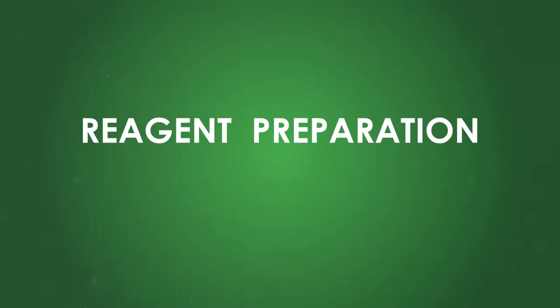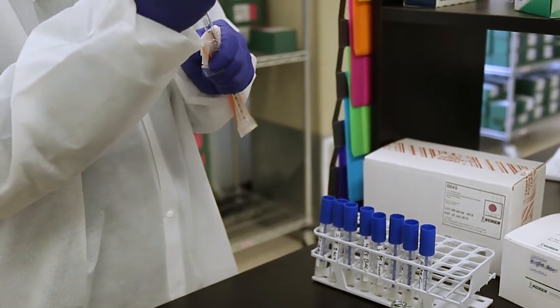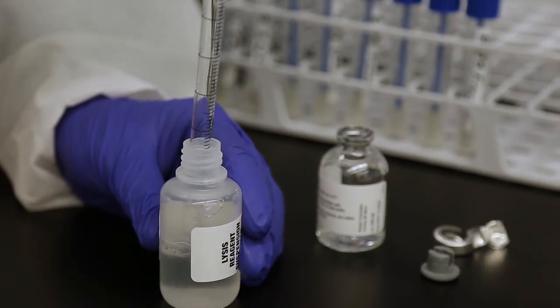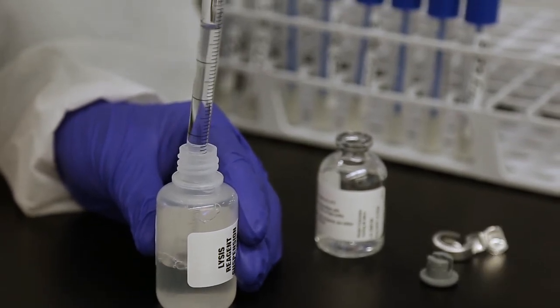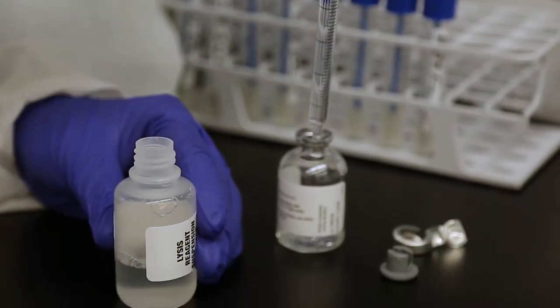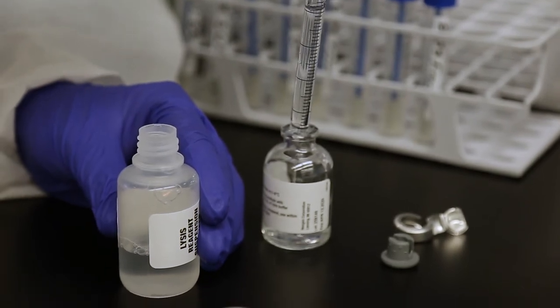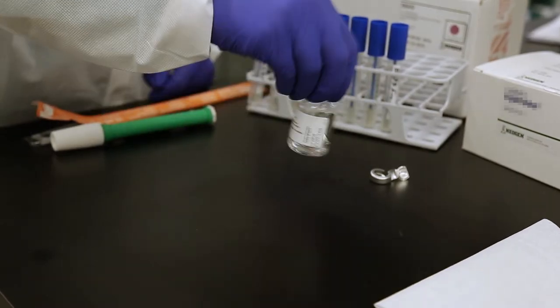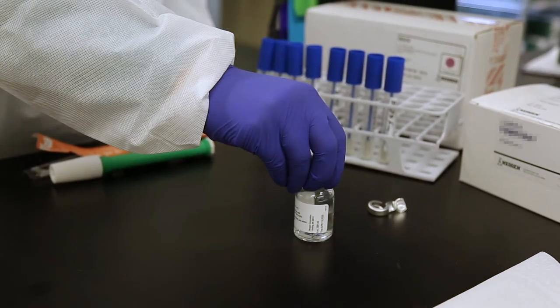Reagent Preparation. Using the 10-milliliter serological pipette and provided pipetter, add 18 milliliters of the lysis reagent to one vial of the lyophilized lysis reagent that's been at room temperature for at least 15 minutes, but less than one hour. Gently swirl to mix. This is enough lysis buffer for 18 samples. Return the non-reconstituted reagents to refrigeration. Any reconstituted reagents can be stored at 2 to 8 degrees Celsius for up to 30 days.